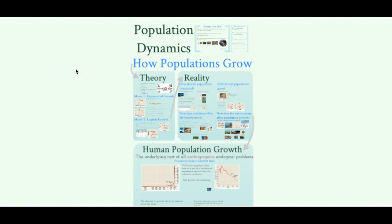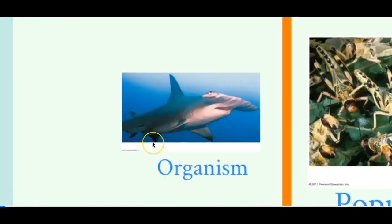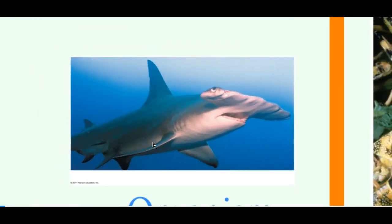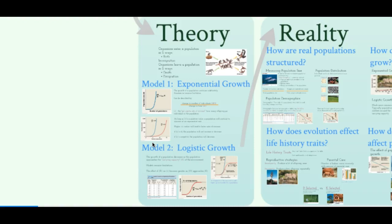In this video we're going to talk about population dynamics — how populations grow. We're going to look at two different theories regarding population dynamics, some examples of how actual populations grow, as well as the growth of human population. We're talking about the second smallest level of organization. The first is an organism; a population is a group of organisms living in the same area. The two big questions we want to answer are how populations are structured and how they are affected by the environment.